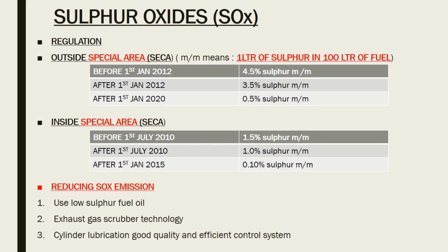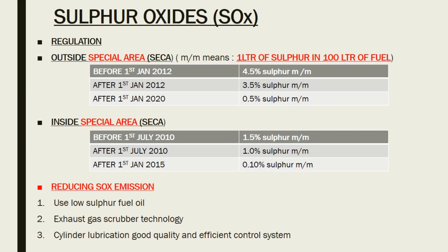Sulfur oxide (SOx) regulations specify the percentage of sulfur content allowed outside the special area and inside the special area (Emission Control Areas). These are presented in tabular form for easy memorization. To reduce SOx emissions, options include: use of low sulfur fuel oil, exhaust gas scrubber technology, or cylinder lubrication with a good quality and efficient control system.